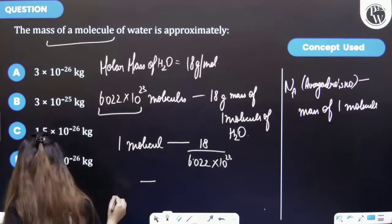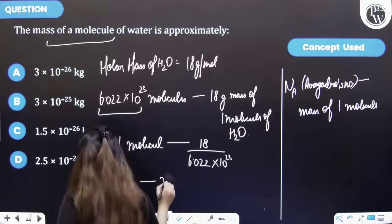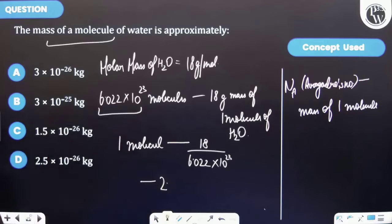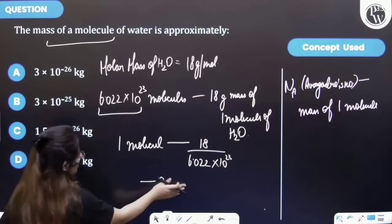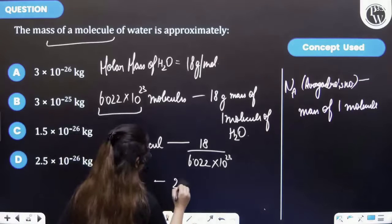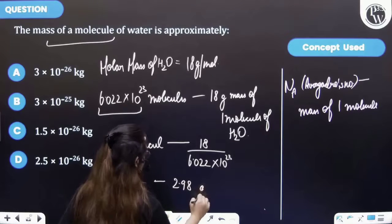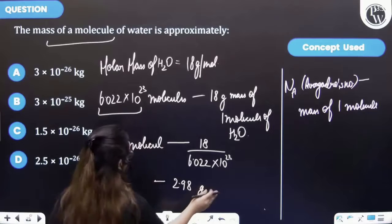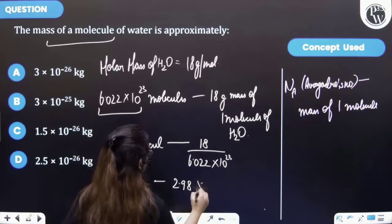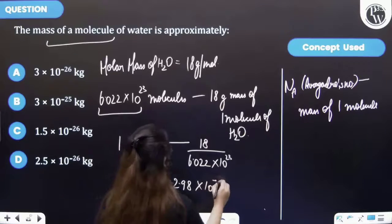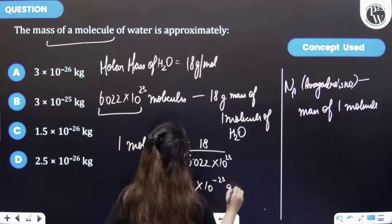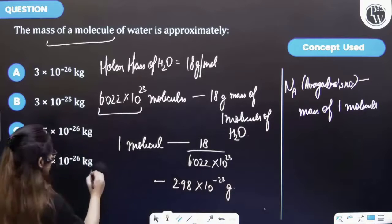to be 2.98 gram into 10 raised to the power minus 23 grams. But we know this thing that 1 kg is equal to 1000 grams.